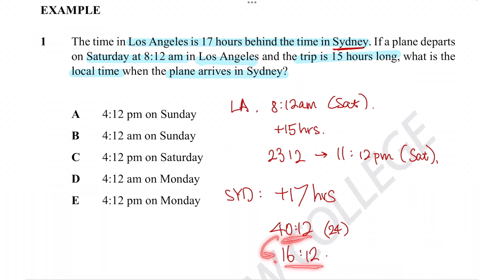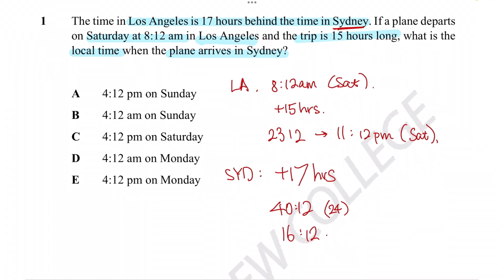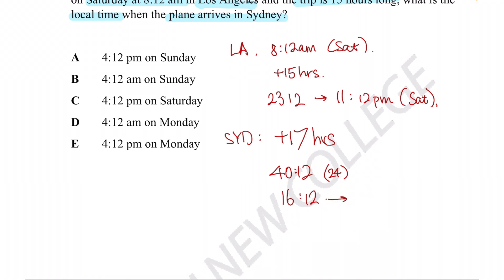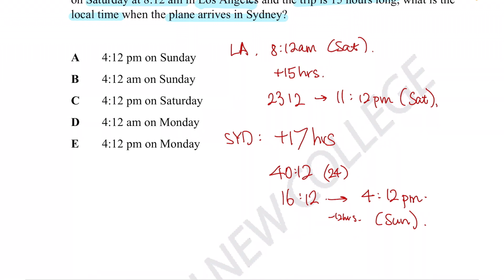Subtracting 24 hours converts us to the correct time of 16:12 in 24-hour format. To convert back to 12-hour time, we subtract 12 hours, giving us 4:12 PM. Since the number was bigger than 12, we know it is in the afternoon. We also know it is the next day after Saturday — Sunday — because we passed 24 hours, and conceptually, if it's close to midnight and we add 17 more hours, it's obviously going to be the next day. So the answer is 4:12 PM on Sunday, which corresponds to option A.